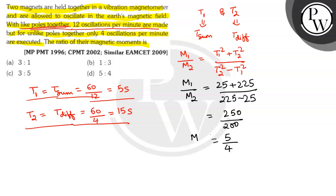So, the ratio of their magnetic moments will be 5 by 4, which is option D. I hope you understood it well. Best of luck.